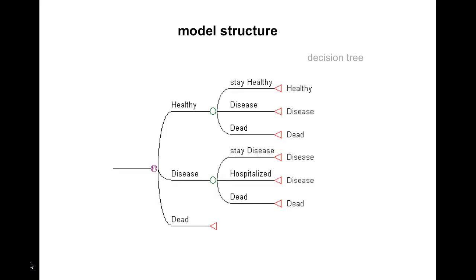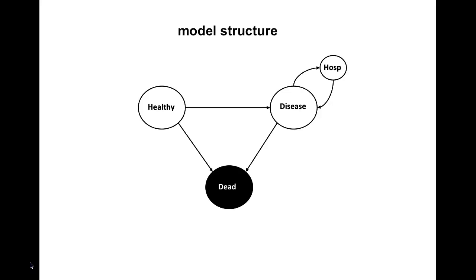Another way to graphically present the structure of a model is by a decision tree. The tree is read from left to right, fulfilling one cycle. Then transitions are made, and the simulation goes from left to right for another cycle, and so on. Our model is quite simple, with few health states and few transitions.